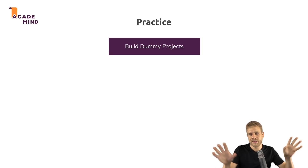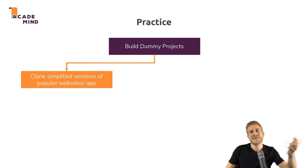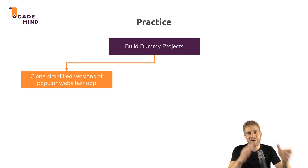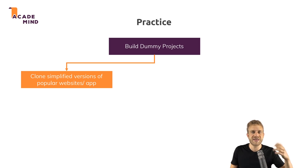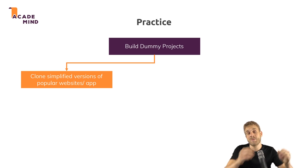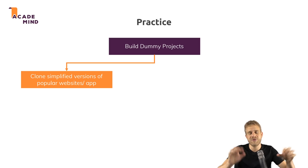Now there are roughly two kinds of applications you could build. Build simplified versions of popular websites or apps — and that does not just mean the big ones like Amazon. If you find a website where a certain feature is interesting to you, well then try to duplicate it. You can even dive into the source code of that page if you need some inspiration. It's probably minified, but you can unminify it to a certain extent. Or simply pick certain websites you like, like Facebook and so on, and start rebuilding very simplified clones of them.